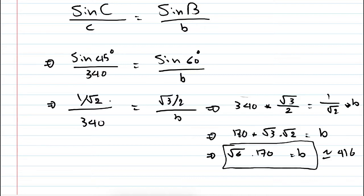The Law of Sines is very easy to use to find missing angles or sides: sin(angle)/opposite side = sin(other angle)/its opposite side. Sometimes in textbooks you see it flipped as c/sin(C) = b/sin(B) — that's the same thing, just inverted.